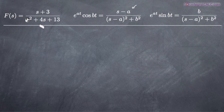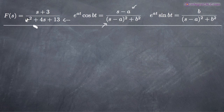In the denominator you have s squared plus 4s plus 13, which is a polynomial. Looking at the formula, we've got the quantity s minus a squared and b squared. We know that with this denominator, if we use the method of completing the square, we might be able to pull out a squared term. So the formula for e to the at times cosine of bt could be promising. We're going to try to complete the square in the denominator and see how this goes.